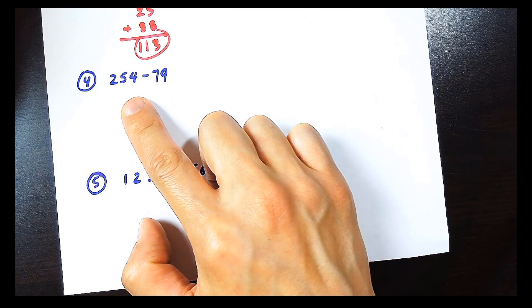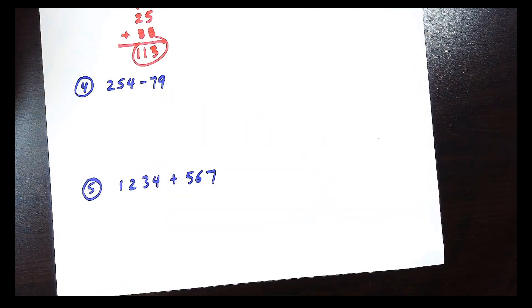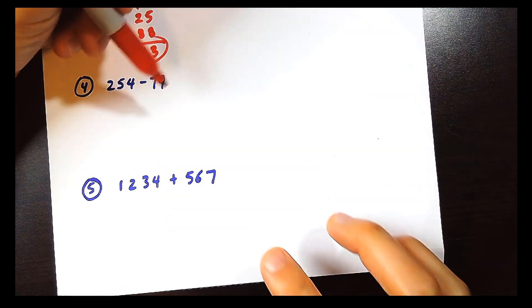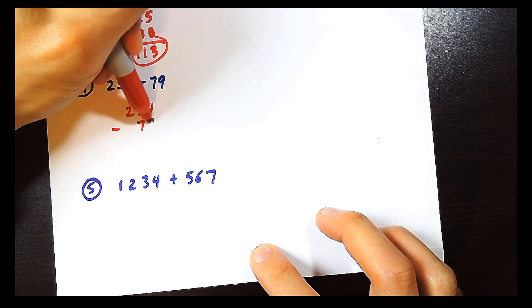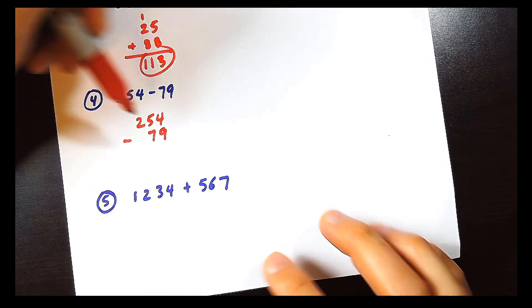What is 254 minus 79? 254 take away 79. Align these up, top and bottom.